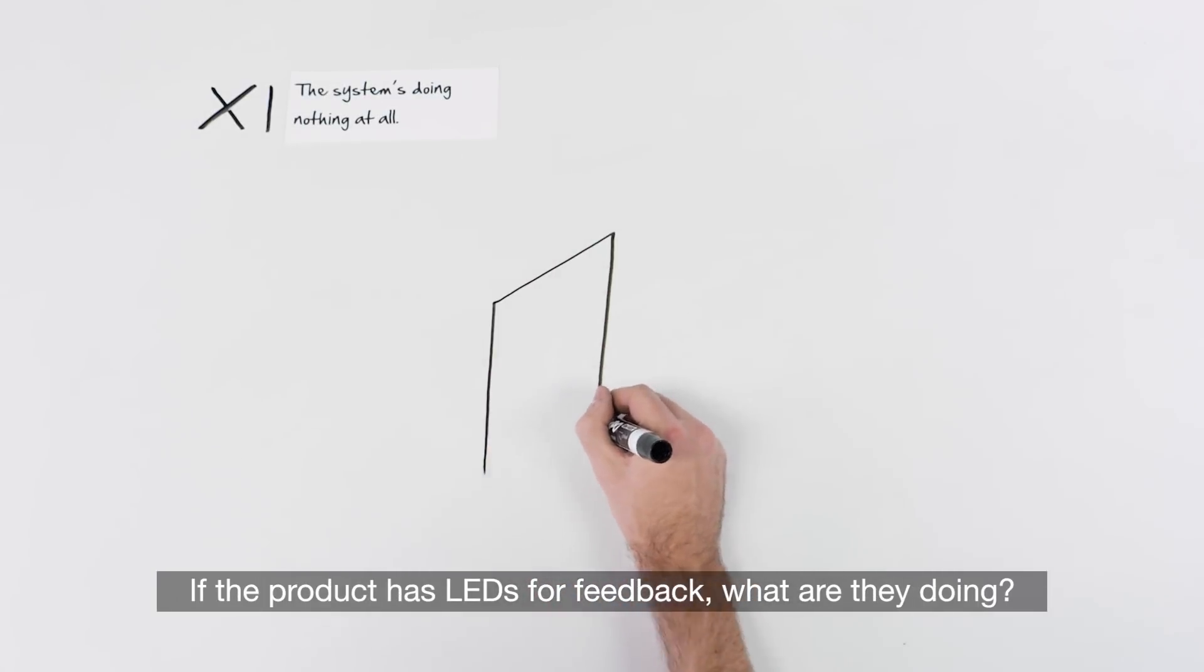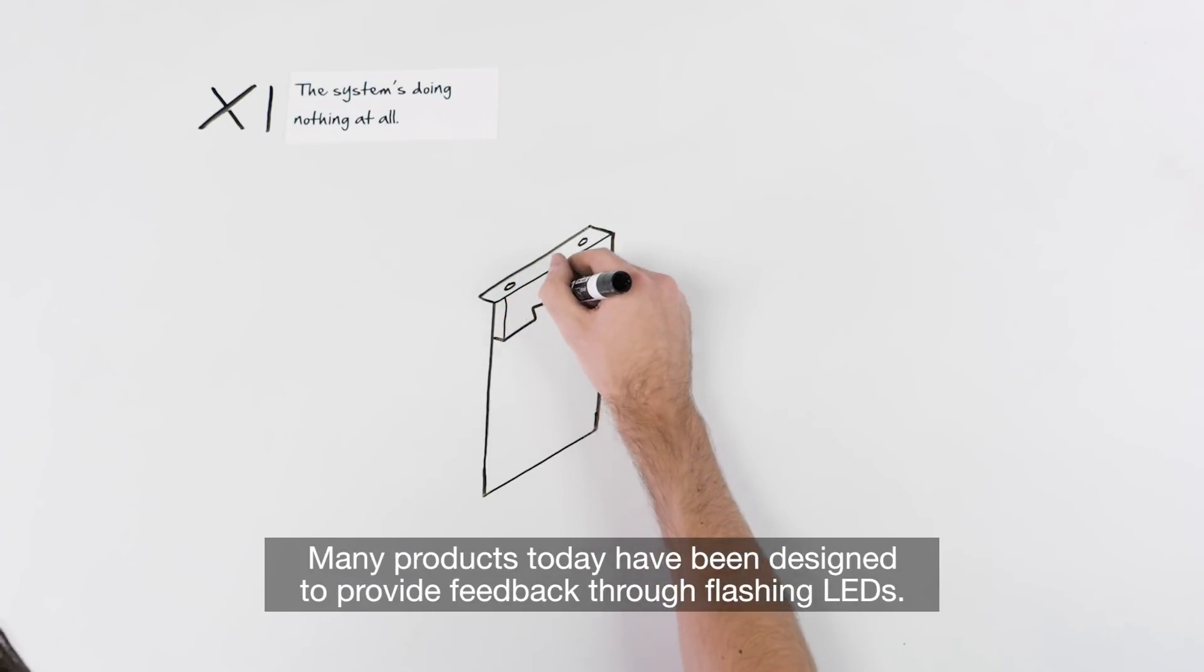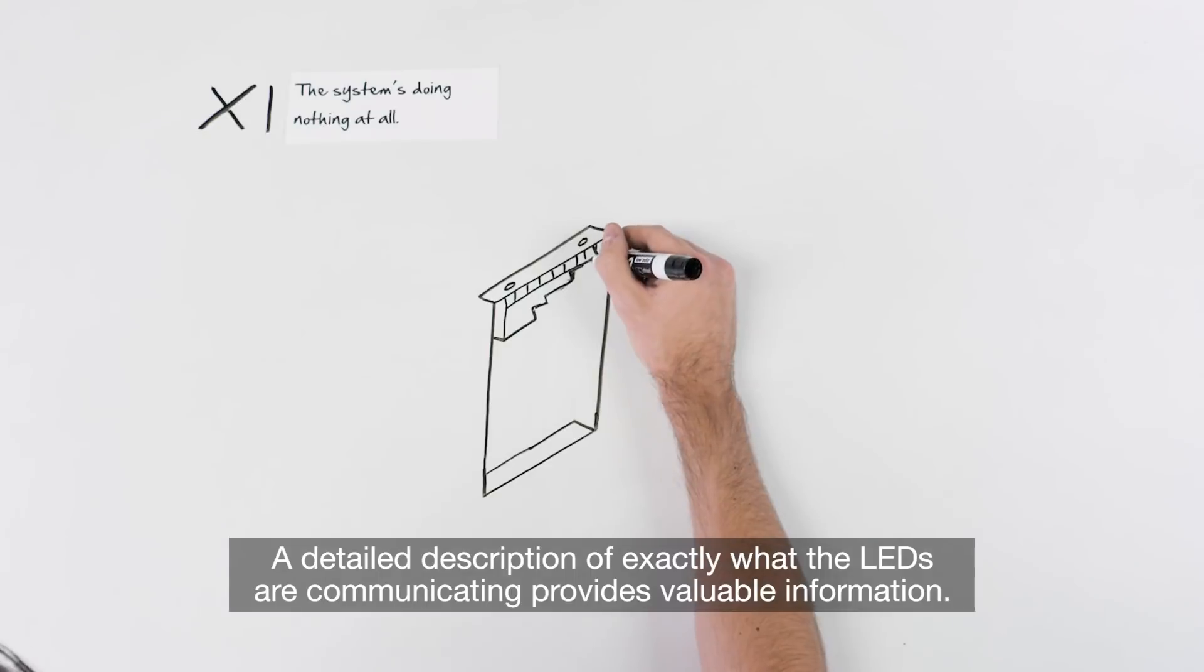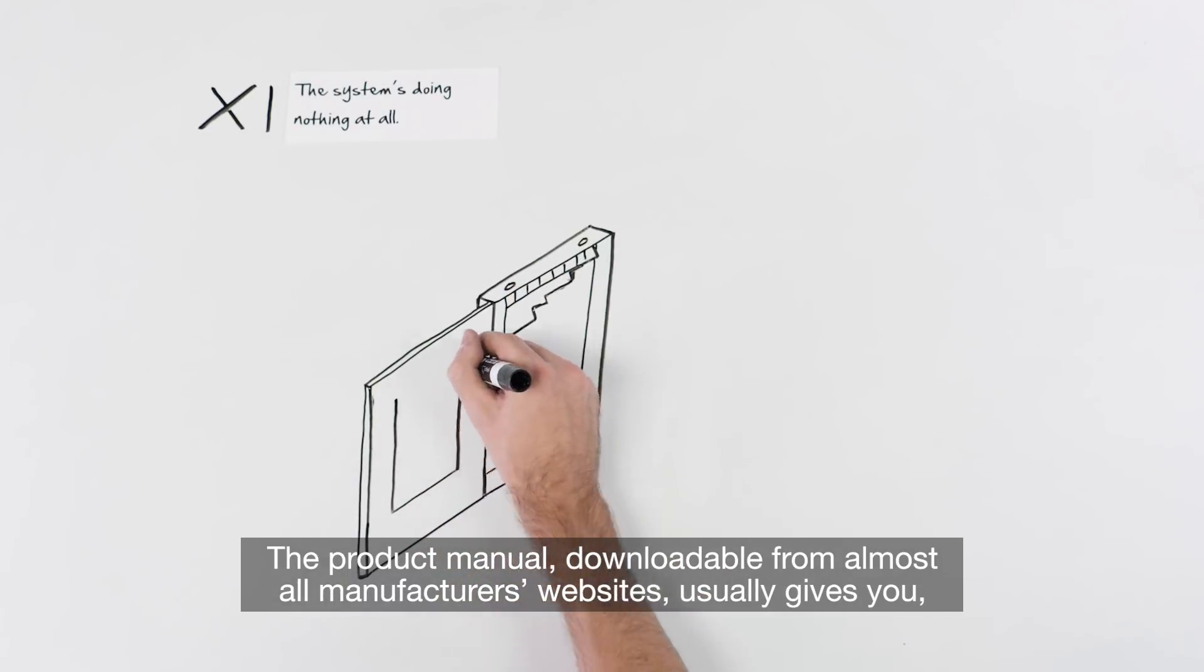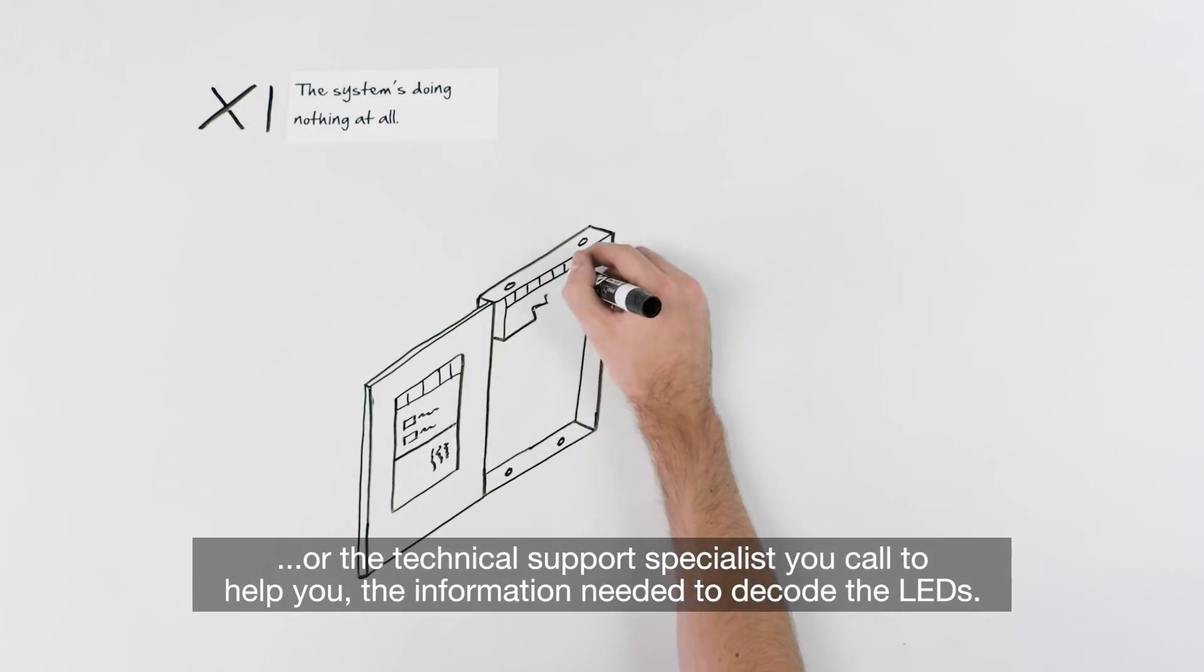If the product has LEDs for feedback, what are they doing? Many products today have been designed to provide feedback through flashing LEDs. A detailed description of exactly what the LEDs are communicating provides valuable information. The product manual, downloadable from almost all manufacturers' websites, usually gives you, or the technical support specialist you call to help you, the information needed to decode the LEDs.